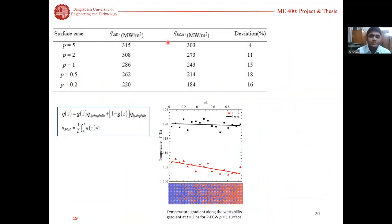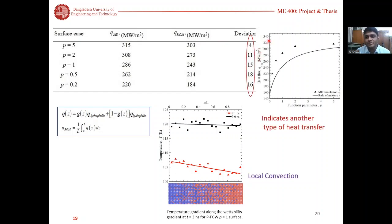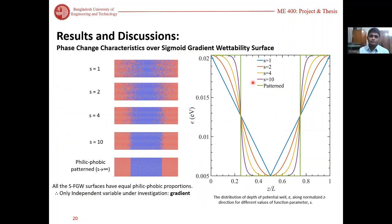Finally, we find the molecular dynamic heat flux and the heat flux from the rule of mixture and compared them. We find a deviation. This deviation indicates that there occurs another mode of heat transfer we call local convection heat transfer, and this occurs due to the temperature gradients on the surface.